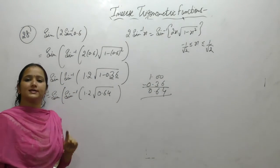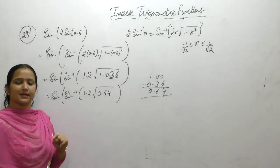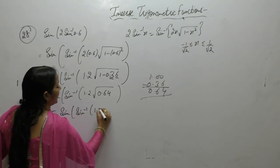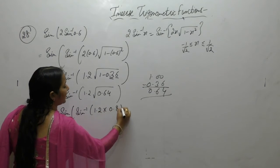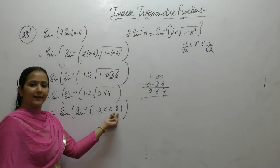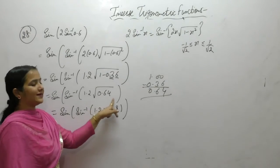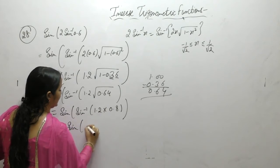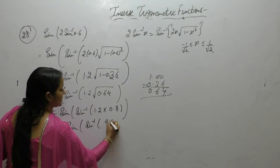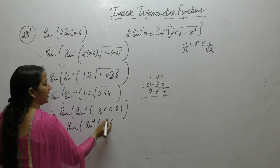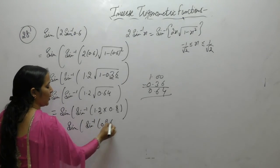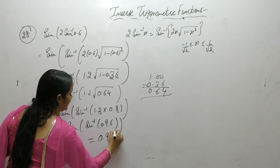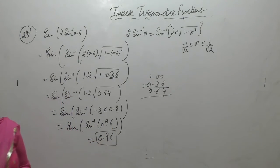Square root of 64 is 8, so 0.8. We get sin(sin⁻¹(1.2 × 0.8)). 12×8 is 96, with decimal after 2 digits gives 0.96. Sine and sine⁻¹ cancel, so the result is 0.96.